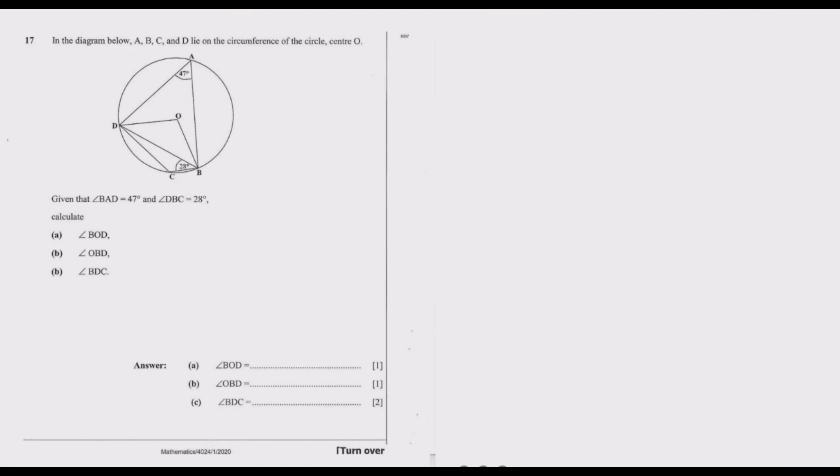Welcome dear viewers. In this episode we are looking at question 17 from the 2020 Mathematics Paper 1. Question 17 reads: In the diagram below, A, B, C, and D lie on the circumference of the circle center O. Given that angle BAD equals 47 degrees and angle DBC equals 28 degrees, calculate: (a) angle BOD, (b) angle OBD, (c) angle BDC.